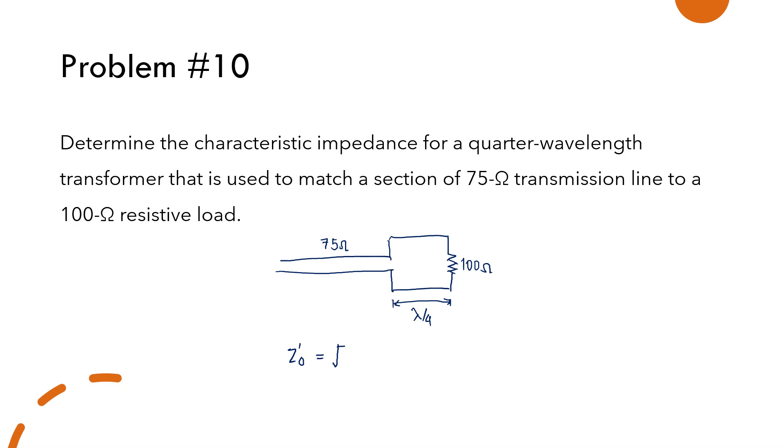is equal to the square root of the load impedance multiplied by the characteristic impedance of the cable. And this is equal to the square root of 100 ohms times 75 ohms.